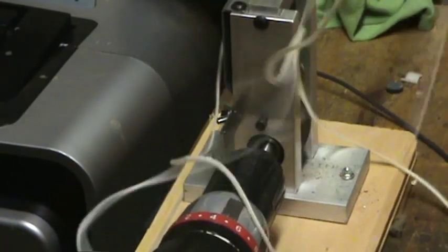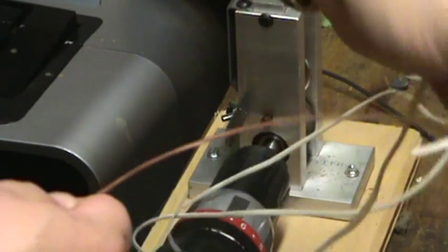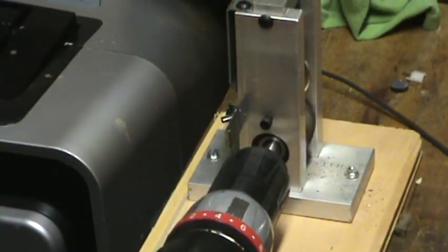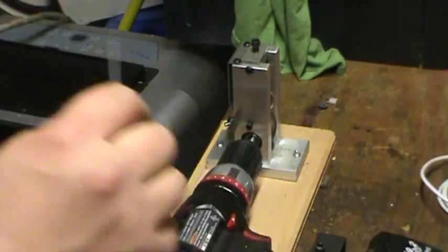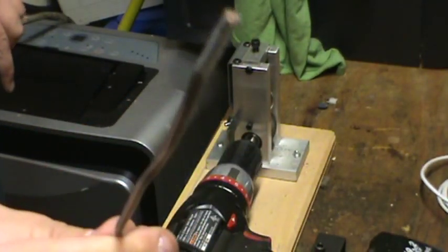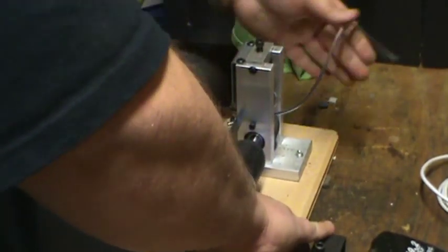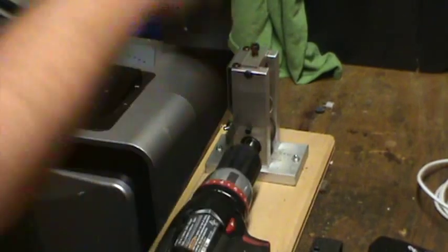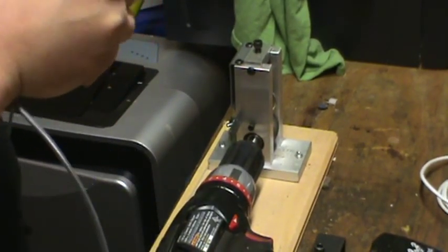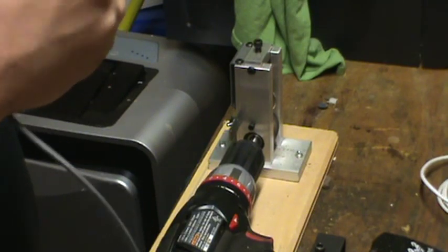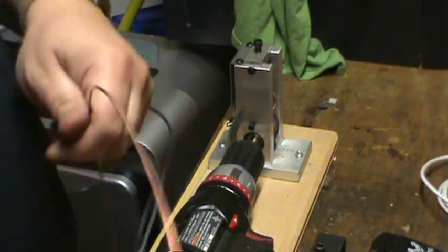I mean, it doesn't get any easier than that. It really doesn't. So let's take a look at that again. We're going to have that center wire that's in the middle of the Romex here. We're just going to stick it in there. There you go. And it's completely stripped off. Just like that.